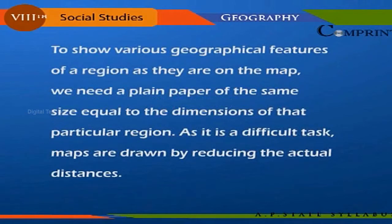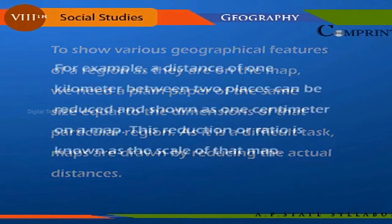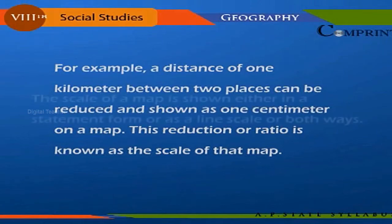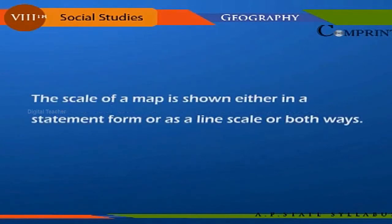To show various geographical features of a region as they are on a map, we would need a plain paper of the same size equal to the dimensions of that particular region. As that is a difficult task, maps are drawn by reducing the actual distances. For example, a distance of one kilometer between two places can be reduced and shown as one centimeter on a map. This reduction or ratio is known as the scale of that map.